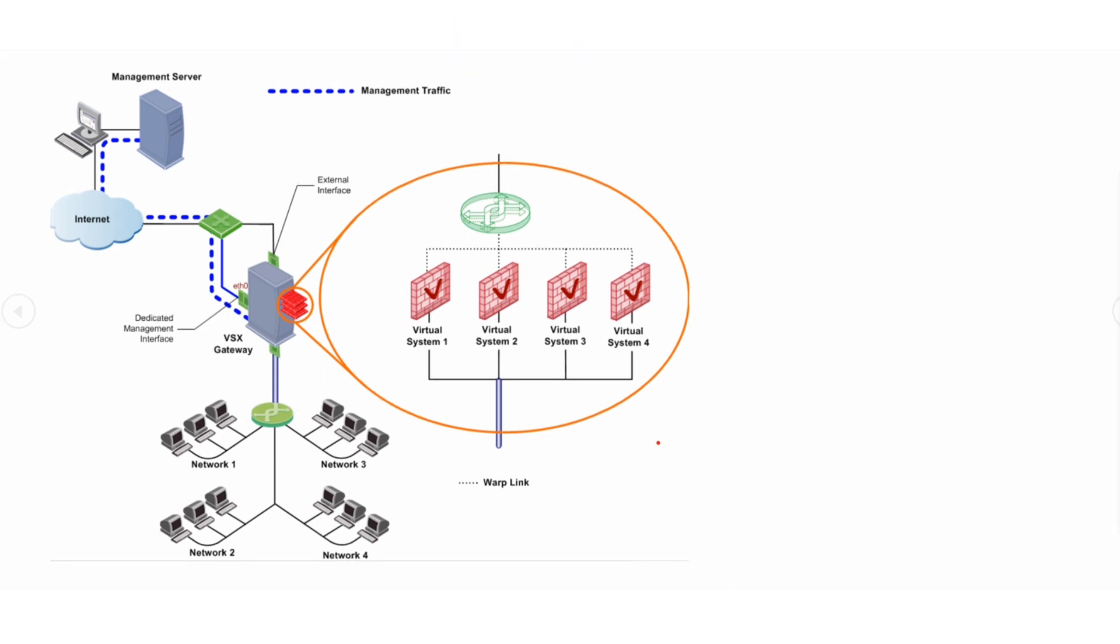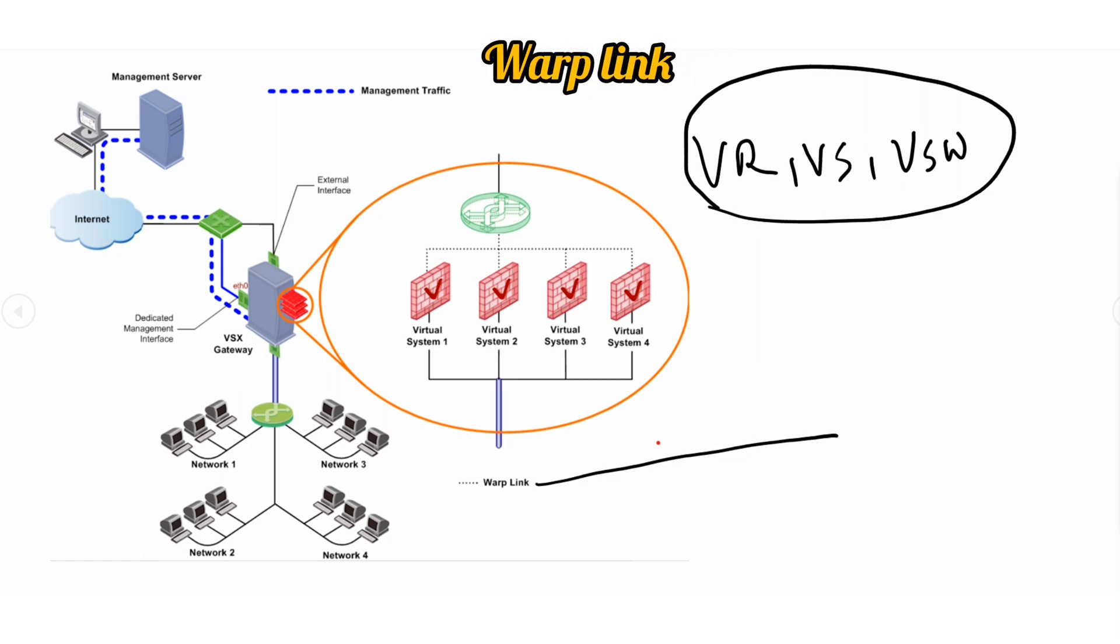Now we have spoken about virtual routers, virtual systems, and virtual switches. Now let's talk about the link which connects these three virtual devices together. We call it warp link. Basically whenever you create these virtual devices, connection between these devices happens via a special interface which automatically creates when you create these virtual devices. That connection or interface we call warp link.